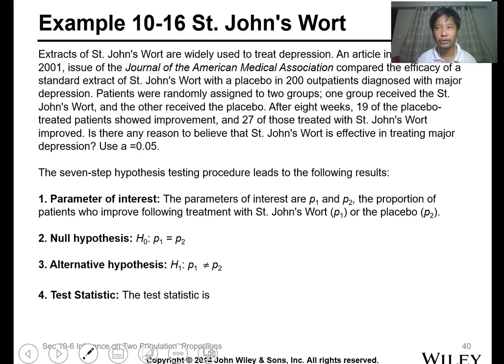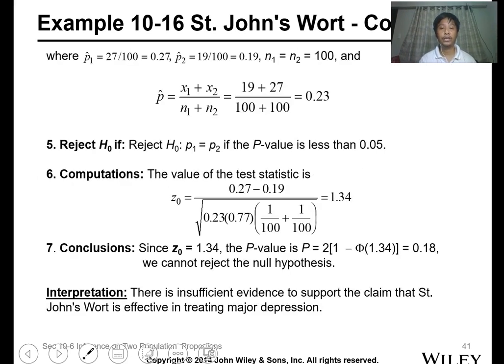We want to know if they have a difference, or if St. John's Wort has an impact. It's difficult to say, but we want to know if there's a difference in terms of proportion. This is the seven-step procedure. Parameters of interest are P1 and P2, the proportions for St. John's Wort and placebo. The null hypothesis is they are the same. Alternative: not equal. The test statistic uses the z-test with your proportions.